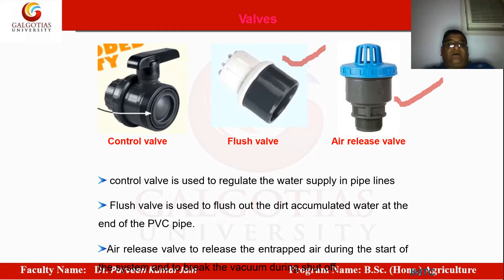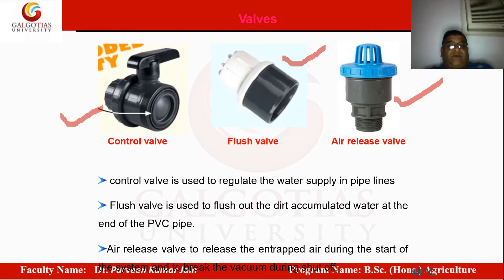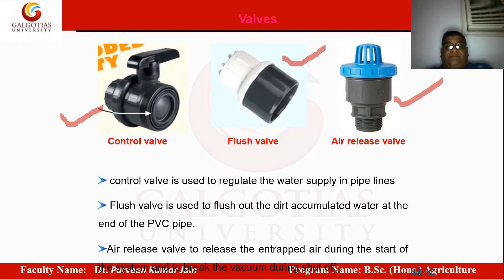Flush valves are located at the end of each main or sub main. Periodically these pipes are cleaned by opening the flush valve so that any accumulated impurities can be washed out. Control valves control different sections and manage the direction of flow — just like traffic lights. The control valve for the desired direction is opened and others are closed.